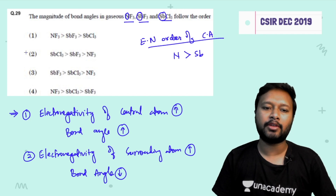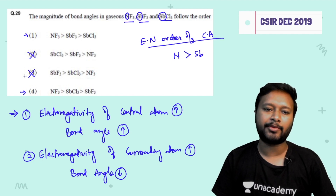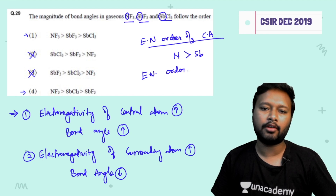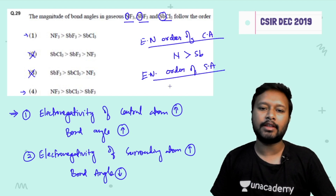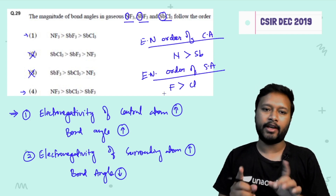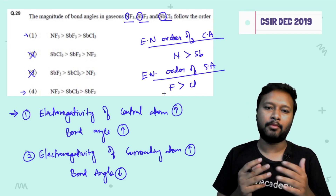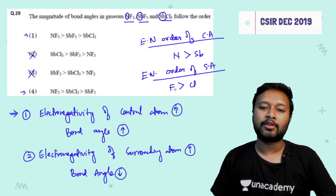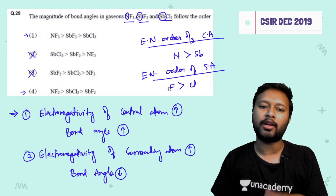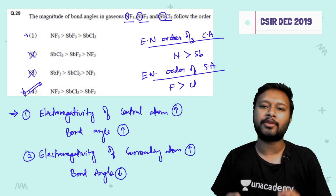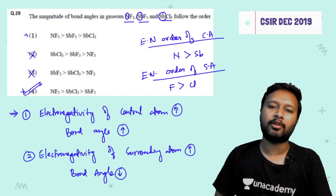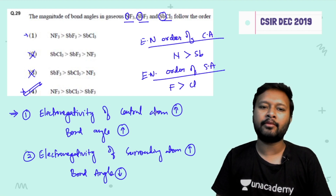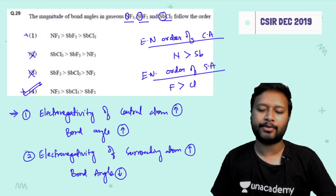Nitrogen is more electronegative than antimony, so NF₃ has a higher bond angle than the antimony compounds. That narrows us to option 1 or option 4. Between SbF₃ and SbCl₃, fluorine is more electronegative than chlorine, so SbF₃ has a smaller bond angle than SbCl₃. Therefore the correct order is given by option 4.